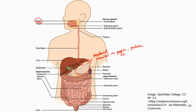After the stomach, food enters the small intestine. The small intestine is divided into three sections. Upon leaving the stomach, food first travels through the duodenum, then the jejunum, and finally the ileum.